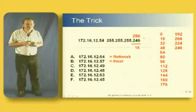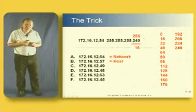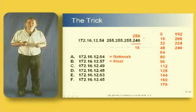If we look at the next one, .57. .57 lays between .48 and .64, so it's a valid host on subnet 48.